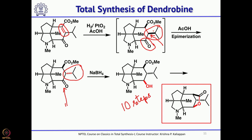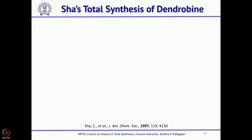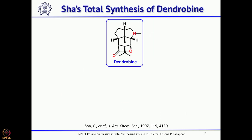Overall, including starting material preparation, Thomas Livinghouse took about 10 linear steps to complete the total synthesis of dendrobine. Though this is a racemic synthesis, the shortest synthesis involved a clever cyclocondensation reaction. Now we will move to the next synthesis.